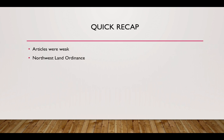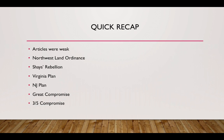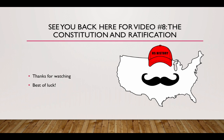Quick recap: the Articles of Confederation were very weak, but there were some positives, including the Northwest Land Ordinances. Shays' Rebellion was led by Revolutionary War veteran Daniel Shays and made up of farmers protesting economic conditions under the Articles. The Virginia Plan was based on population; the New Jersey Plan proposed equal representation per state — they hammered out the Great Compromise. The Three-Fifths Compromise counted 60% of slaves towards population in the House. The Slave Trade Compromise allowed the international slave trade to end in 1808 — circle that year, it's very important. Look forward to seeing you back for video number eight, The Constitution and Ratification.